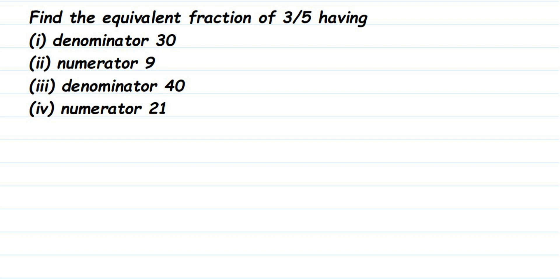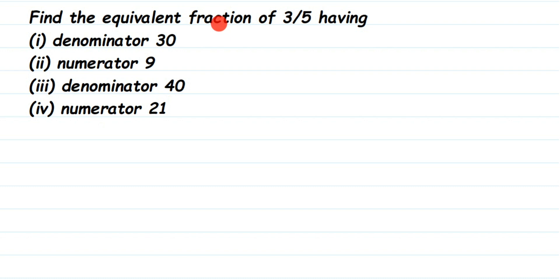Hey everyone, here is a question: find the equivalent fraction of 3/5 having denominator 30, numerator 9, denominator 40, and the last one is numerator 21. So here we have to find out the equivalent fraction, given the condition that the denominator should be equal to 30, numerator 9, and the next two questions.